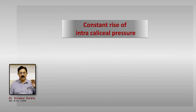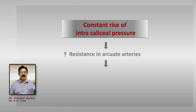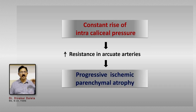In the majority of patients, in place of an episodic rise of pressure, you have a state of constantly high pressure in the kidney. This results in increased resistance to blood flow in the arcuate arteries, which will lead to progressive ischemia of the renal parenchyma, resulting in atrophy.